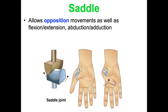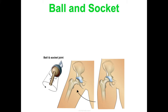Saddle joints allow opposition movements, as well as flexion, extension, abduction, and adduction. The saddle joint is what makes your thumb special and opposable — it lets you fold the thumb in, touch each fingertip to your thumb, or form a number four shape with your hand.